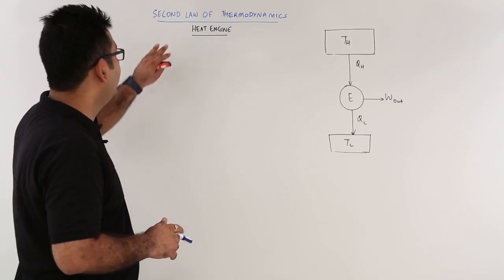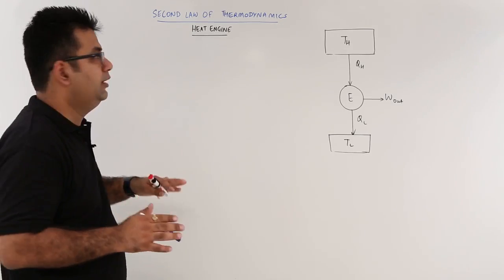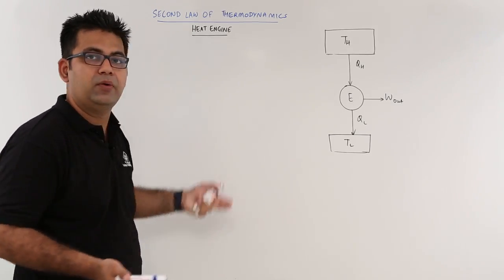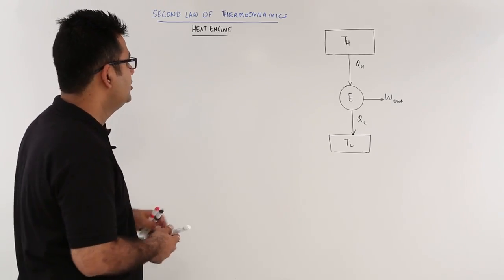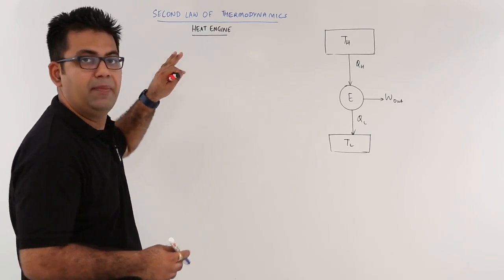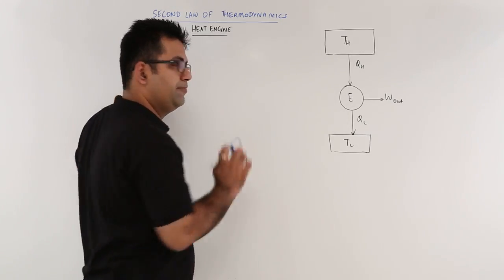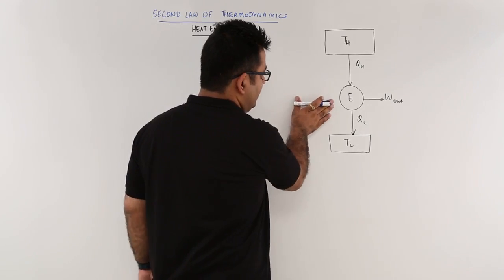Now let us talk about heat engine, which is a very important component when we start talking about the second law of thermodynamics. So a heat engine schematic looks like this. This is a heat engine.